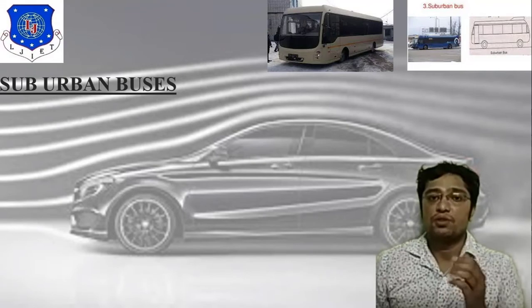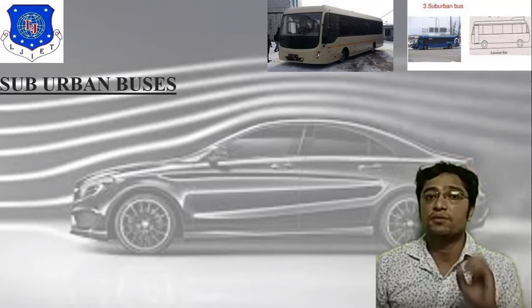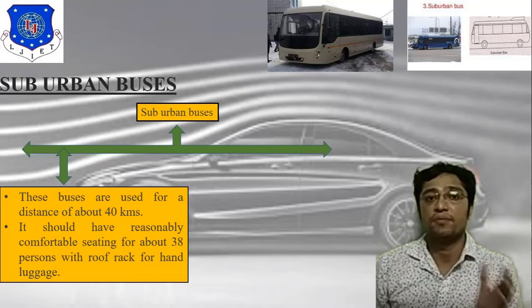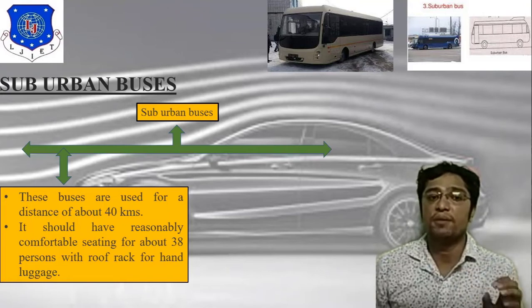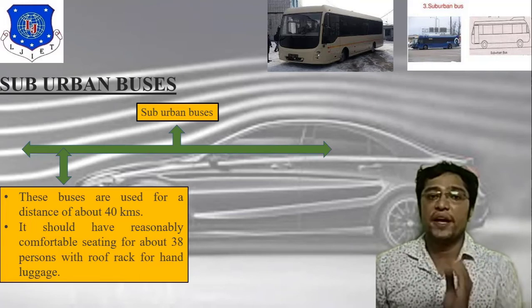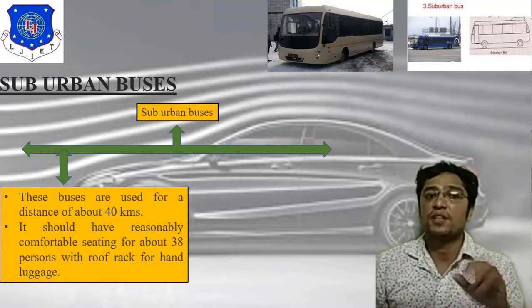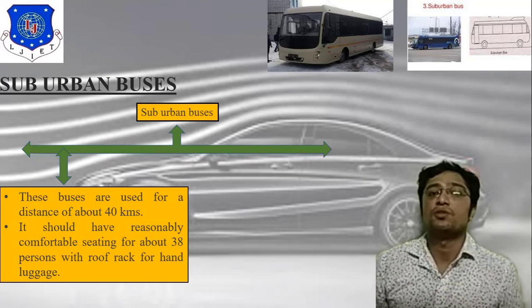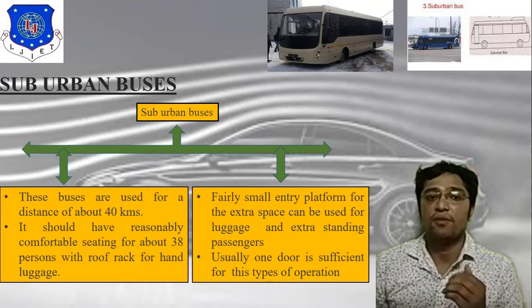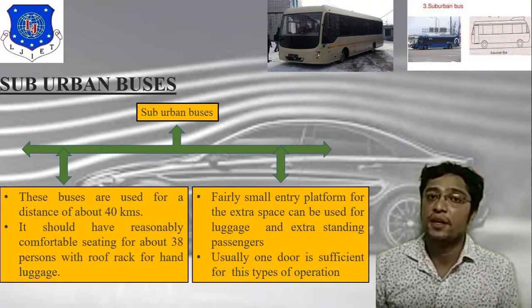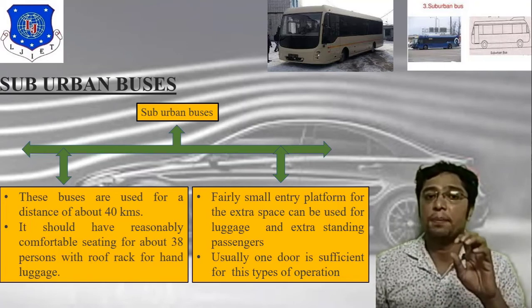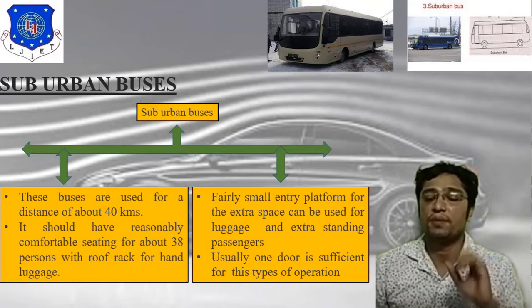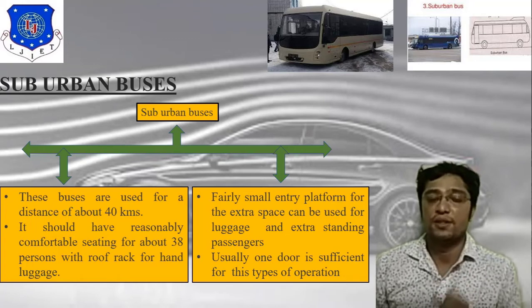Sub-urban buses are used for a distance of about 40 km. They have a reasonably comfortable seating arrangement for about 38% of passengers, with a roof rack for hand luggage. They feature a fairly small entry platform where extra space can be used for luggage and standing passengers. Usually one door is sufficient for this type of operation.